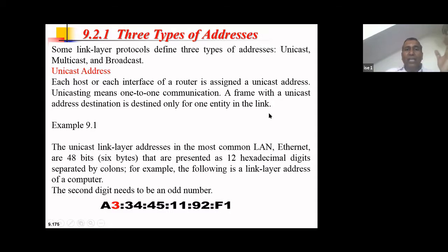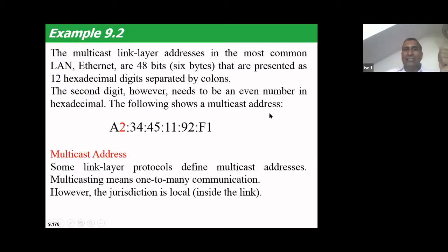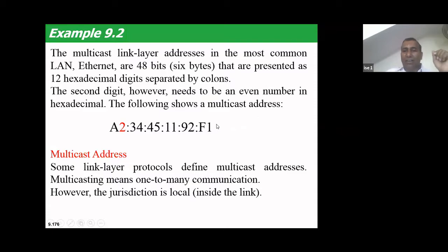Next is multicast address, common in LANs and Ethernet. It is also 48 bits in length, or six bytes, and is represented as 12 hexadecimal digits separated by colons. Four bits per hex digit times 12 digits equals 48 bits, which is six bytes.